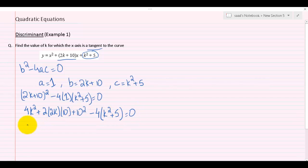Ok, so now we have 4k squared plus 2 times 2 is 4, 4 times 10 is 40, plus 40k plus 100 minus 4k squared minus 20 equals 0. So plus 4k squared and minus 4k squared will cancel out.